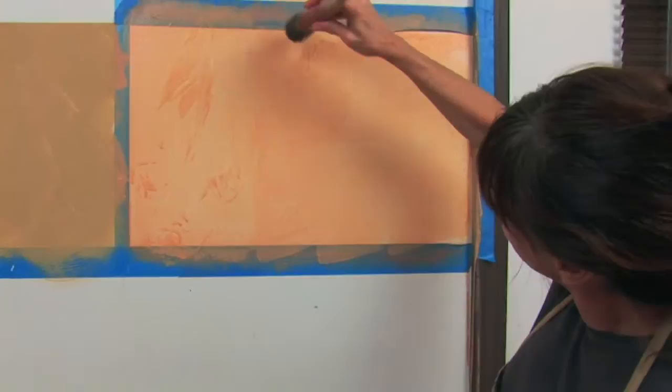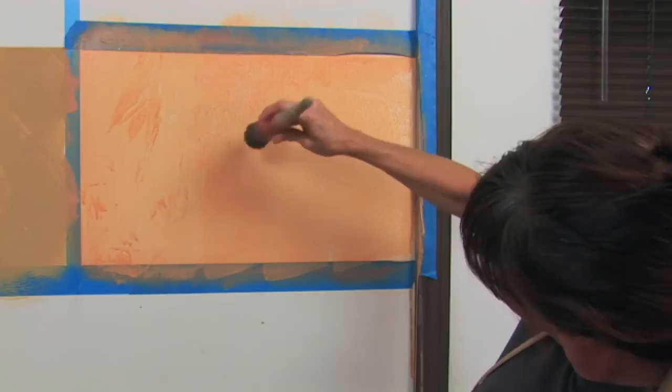Then over here, if you want to make more texture, you can use your stippling brush again and just push down the paint and get a texture going in there.